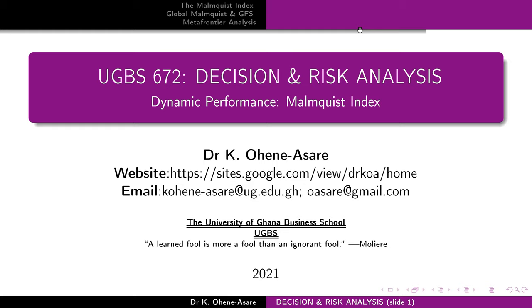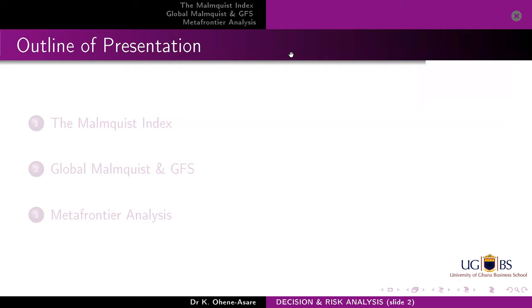One measure we are going to look at in assessing productivity — there are different measures of productivity. We'll be looking at three indices or three ways of assessing dynamic productivity, three ways of assessing productivity change. The first one is known as the Malmquist productivity change. The second is known as the global Malmquist productivity change.